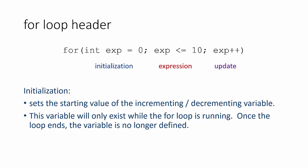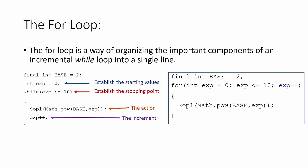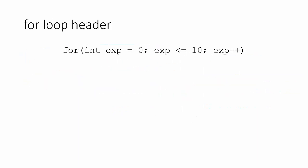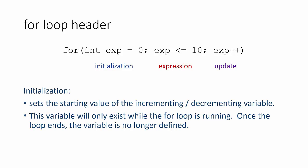The variable used in the initialization is only going to exist while the for loop is running. With our while loop, we could call and output the value of exp after the loop has run and get an actual value. With the for loop, that is not the case — the variable defined in our initialization goes away and gets cleared from memory once the for loop is done executing. So it's actually going to throw an error if we try to print out exp after the for loop is done.